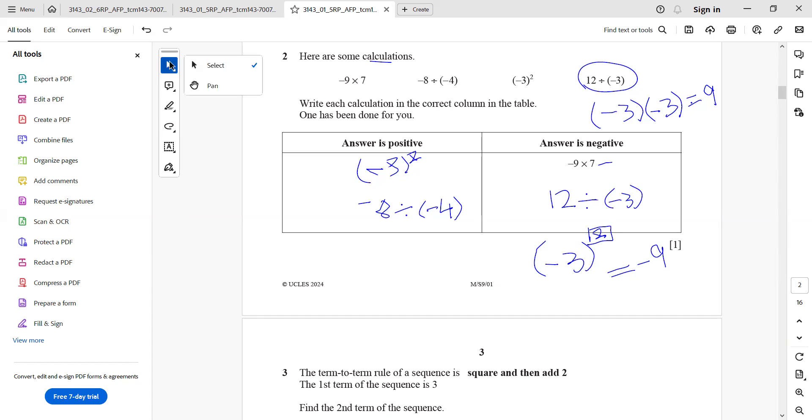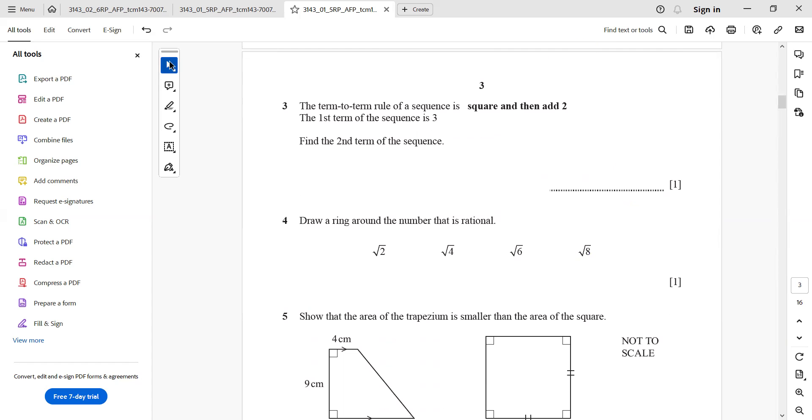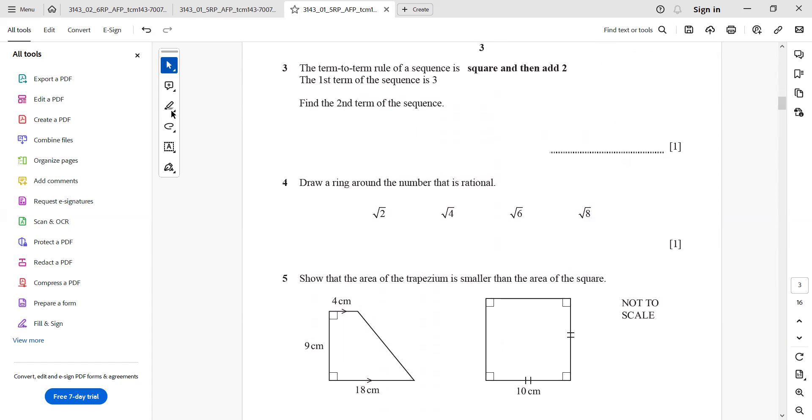We proceed to question number 3 now. The term-to-term rule of a sequence is square and then add 2. The first term of the sequence is 3. To find out the second term of the sequence, we need to follow these steps: squaring the amount and then adding 2.